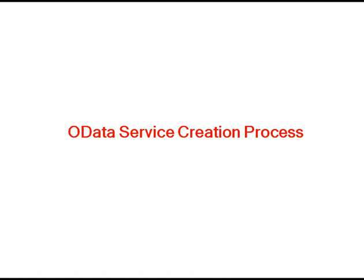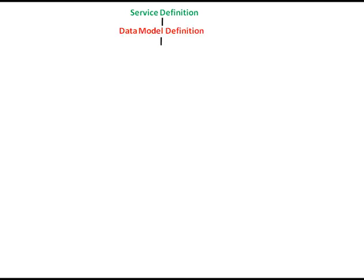Let's see the OData service creation process. Before creating an OData service, first we have to define the service itself. The first step which we need to follow is defining the data model. In the data model definition, we have two stages: the first one is creating a project, and the second one is creating the data model.